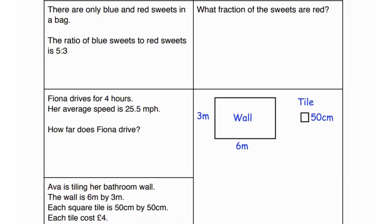Next question says there are only blue and red sweets in the bag. The ratio of blue sweets to red sweets is 5 is to 3. What fraction of the sweets are red? So for red, we will do 3 over 5 plus 3. The denominator always shows the total of the numbers in the ratio. And the numerator shows the quantity that we want, which is red sweets over here. So 3 over 5 plus 3, which is 3 over 8. That is your fraction of sweets which are red.